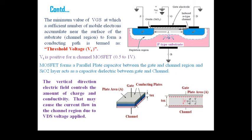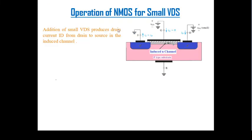Today we will start with the operation of an N-MOSFET for a small VDS. Last time we only covered the effect of gate-to-source voltage with no drain-to-source voltage. Now we have to think about how a small VDS value affects the circuit operation of a MOSFET. We already made a channel due to gate-to-source voltage and now we are applying a small drain-to-source voltage VDS.